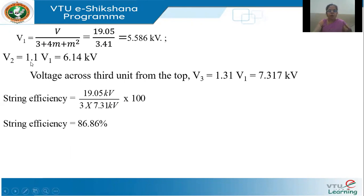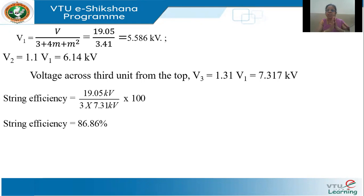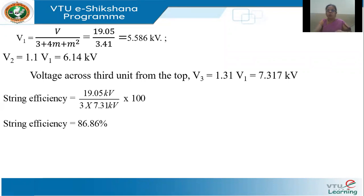Because V2 = 1.1·V1 and V3 = 1.31·V1, these ratios do not depend on the value of V. They depend only on the value of m. So if you solve the same problem for 66 kV or 220 kV with m = 0.1, V1, V2, V3 values will be different but the string efficiency will still be 86.86%. The string efficiency does not depend on the voltage level.